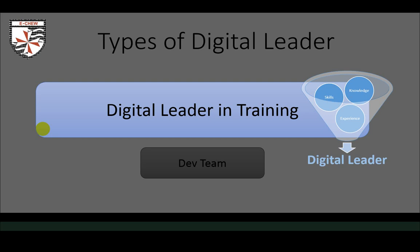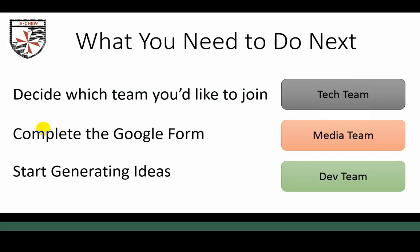So what do you need to do next? Those are the three teams — or the digital leader in training path. I'd like you to decide which team you want to join: is it the tech team, the media team, or the dev team? When you've decided, complete the Google form attached to this link. Start generating ideas, collaborating with the other people in the team, and talking to me about what you want to do as part of digital leadership. This could be absolutely huge — it's going to look brilliant on your CV that you've connected with so many people in school and led the digital leadership team at Chew Valley.